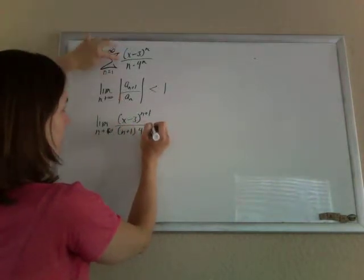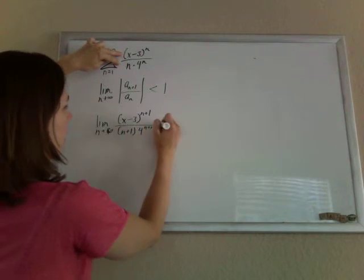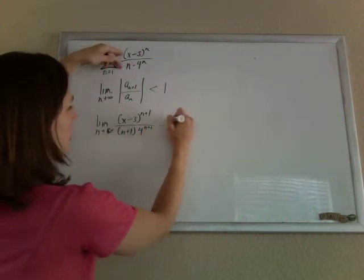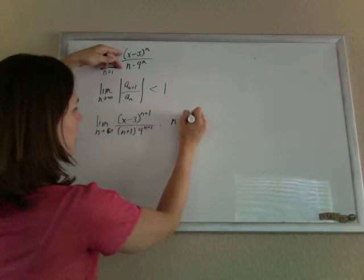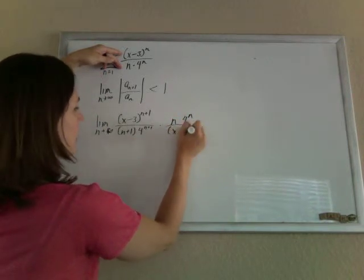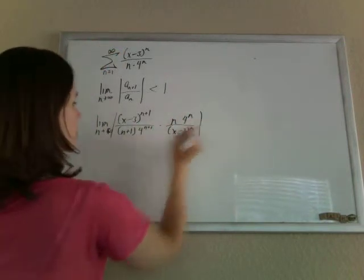And since we're dividing by the original a sub n, I'm just going to flip and multiply. So n times 4 to the n over x minus 3 to the n, the absolute value of this whole thing.